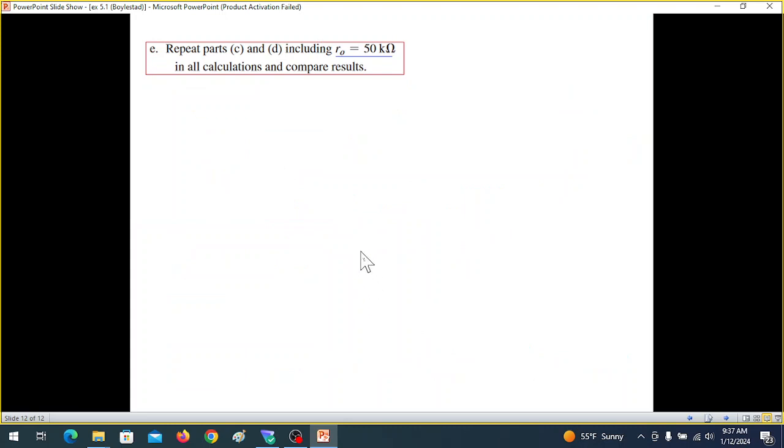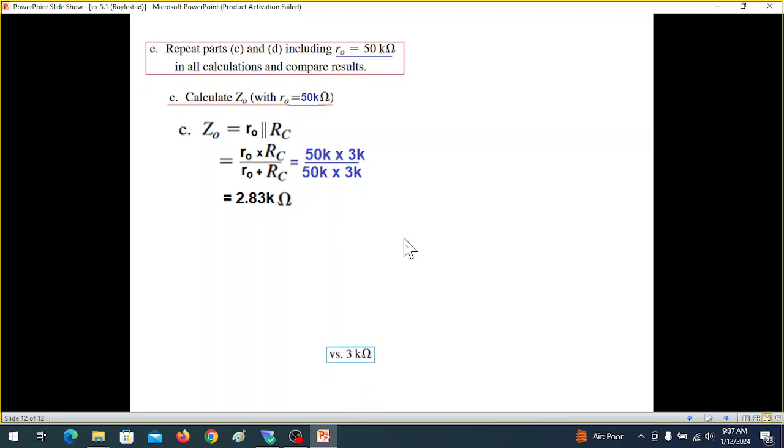So the four parts we have done. Now the last part is saying repeat part C and part D including RO to be 50 kilo. So earlier we have done it with RO to be infinity, and now is giving a value that let's consider it with 50 kilo and see its effect, compare the results. Okay, so we'll just use the same formula except that for RO now we'll have 50 kilo. And solving this, ZO will be 2.83. Now remember earlier we had found it to be equal to RC, which was 3 kilo. What has happened? When we have incorporated a fixed value or a non-infinity value of RO, then our Z out has reduced from 3 kilo to 2.83.